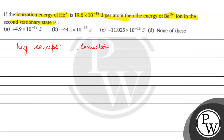Humare pas formula kya hota — ionization energy is basically rH into Z square. Energy of beryllium plus 3 ion woh kya hojaega — humare pas woh hojaega minus rH Z square by n square.